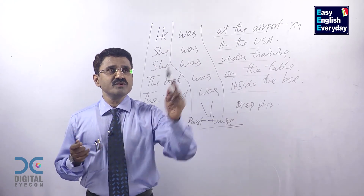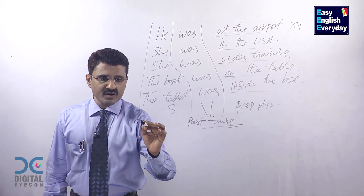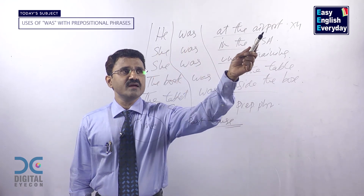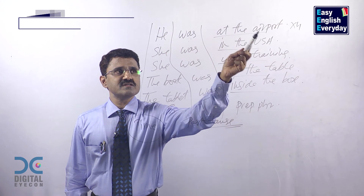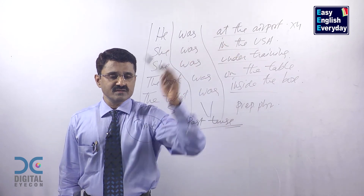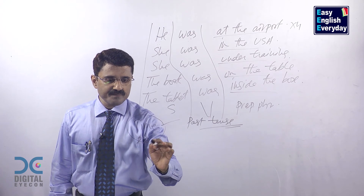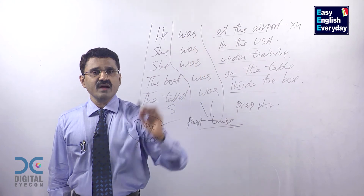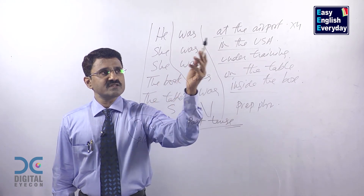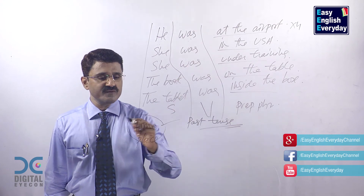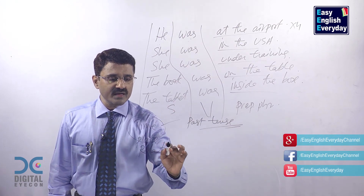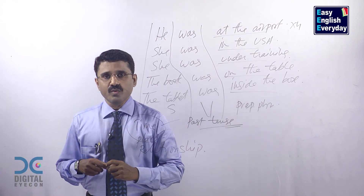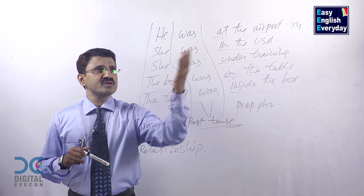When should you use this type of sentence? When talking about time — the exam was at 9 o'clock, the exam was on Sunday, the exam was in December. Then place — he was in Hyderabad, he was in America, he was in Singapore, he was at home, he was on the second floor. Then relationship — he was against violence, he was against corruption, he was against war, he was against child abuse.